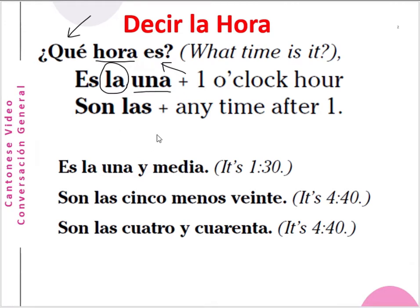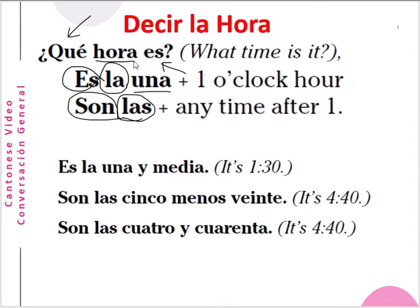Son las dos, son las tres — if the time is more than one o'clock, let's say two, three, or four, up to twelve o'clock, we use son and the article las. Son and las mean 'they are' — for example, son las tres or son las cuatro. In Spanish, for one o'clock we use es and the singular article la; from two until twelve we use son and las.